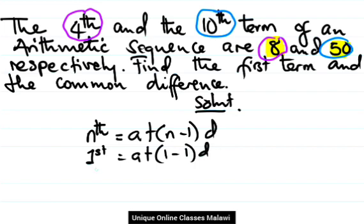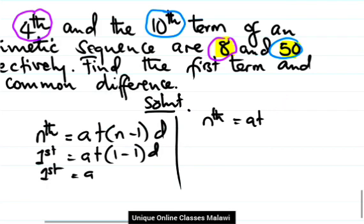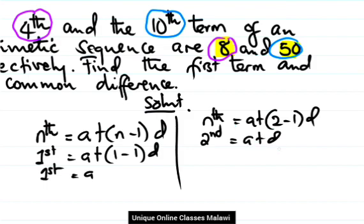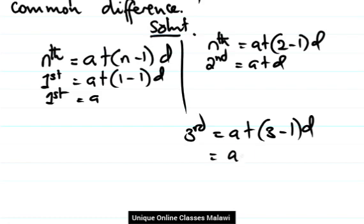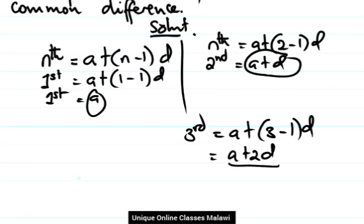Second term: when n is 2, nth term equals a plus open bracket 2 minus 1, then d. So 2 minus 1 is 1, times d is d. So second term will be a plus d. Now the third term: when n is 3, we have third term equals a plus open bracket 3 minus 1, then d. Three minus 1 is 2 times d. So we have first term a, second term a plus d, and third term a plus 2d. Similarly, fourth term equals a plus 3d, fifth term equals a plus 4d, and so on.